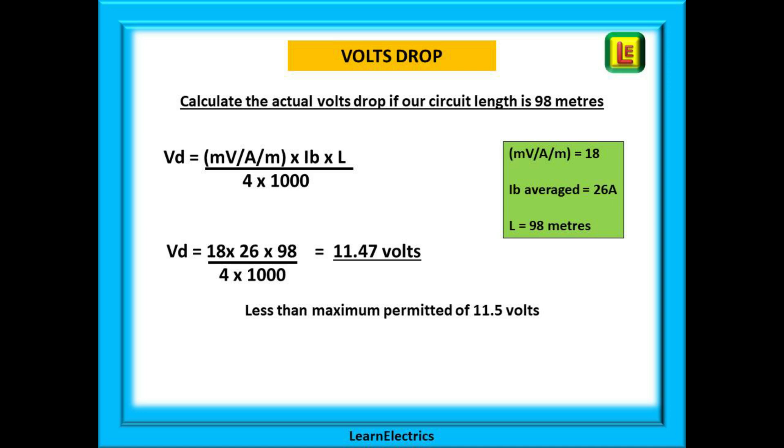And how easy is that? If we had used the maximum load current, what would the volts drop have been? Significantly higher. I hope you can see how useful it is to do the calculation this way.